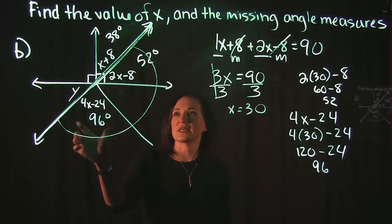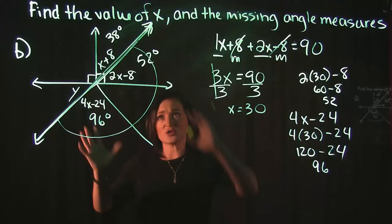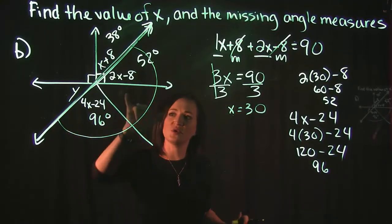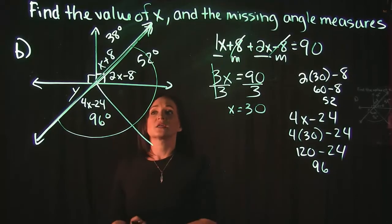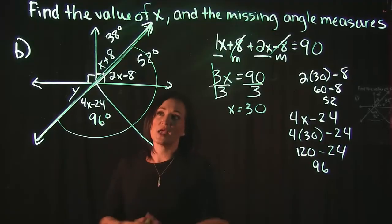Now, I know this one is 96. I know this one is 52. So if we take 180, subtract 96, subtract 52, we should get what this one here is equal to. All right, because we know that everything within a straight angle equals 180 degrees.